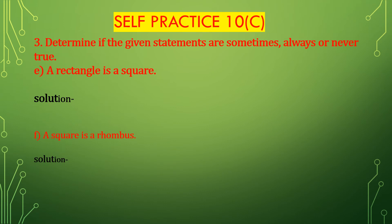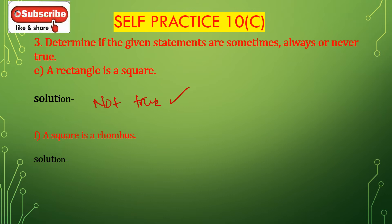Bit E: a rectangle is a square. This is never true — a rectangle is not a square. Bit F: a square is a rhombus. This is always true — a square is a rhombus.